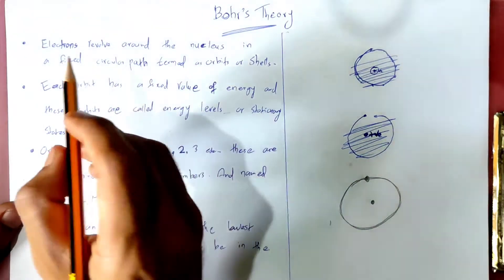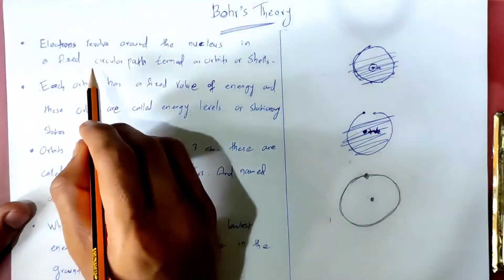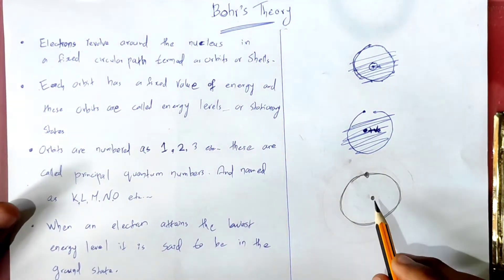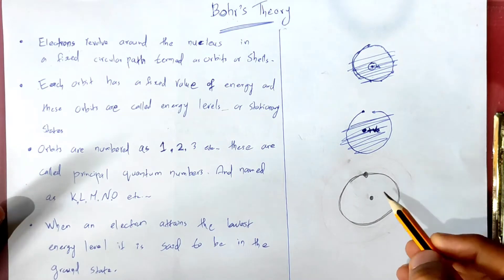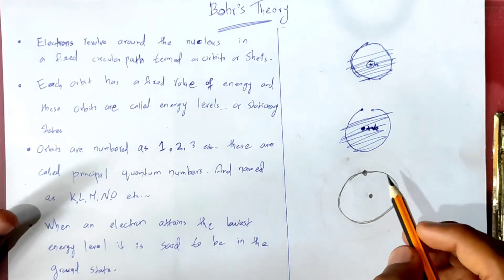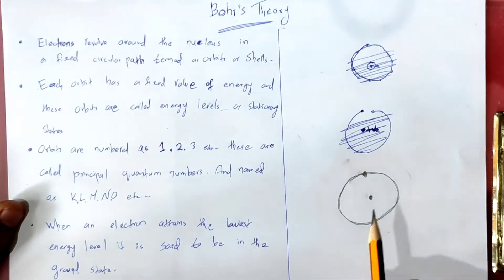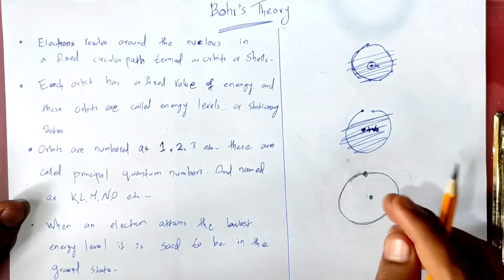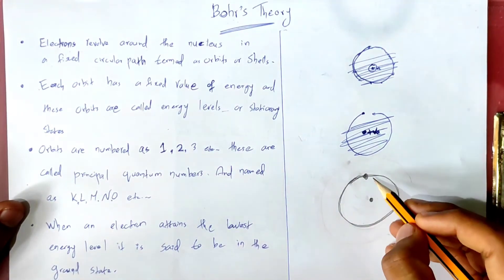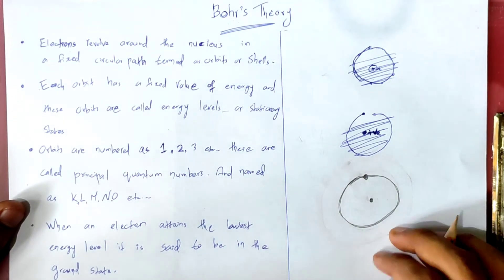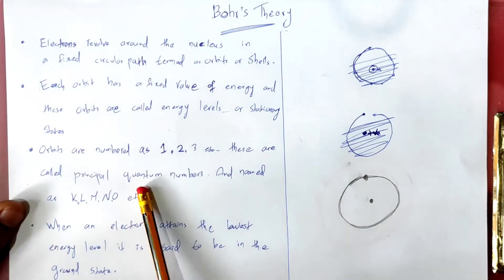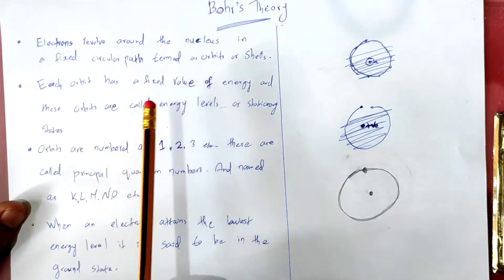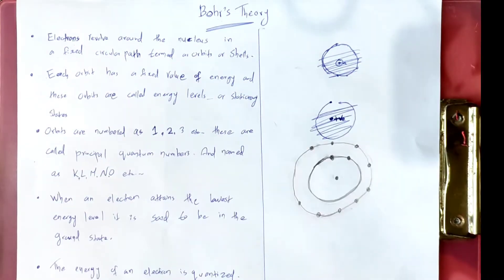According to Bohr's model, electrons revolve around the nucleus in a fixed circular path termed as an orbit. Each orbit has a fixed value of energy, and these orbits are called energy levels or stationary states.